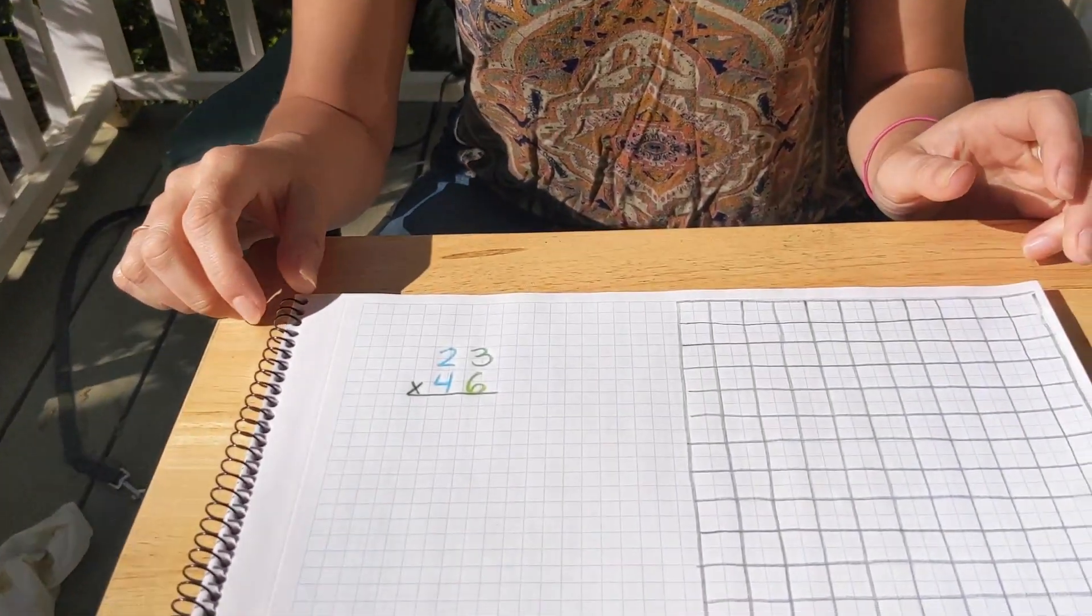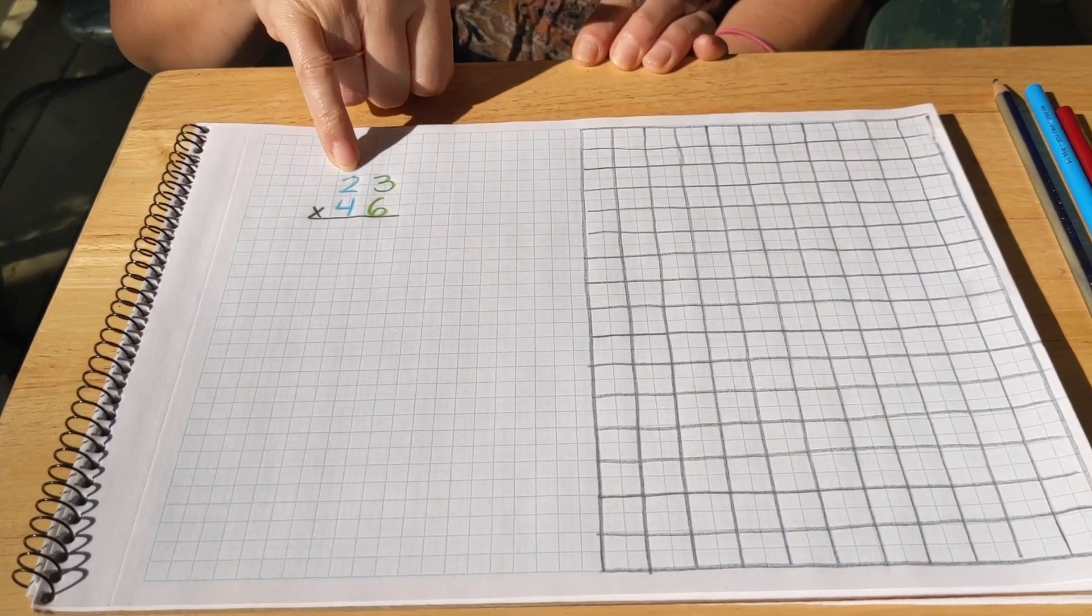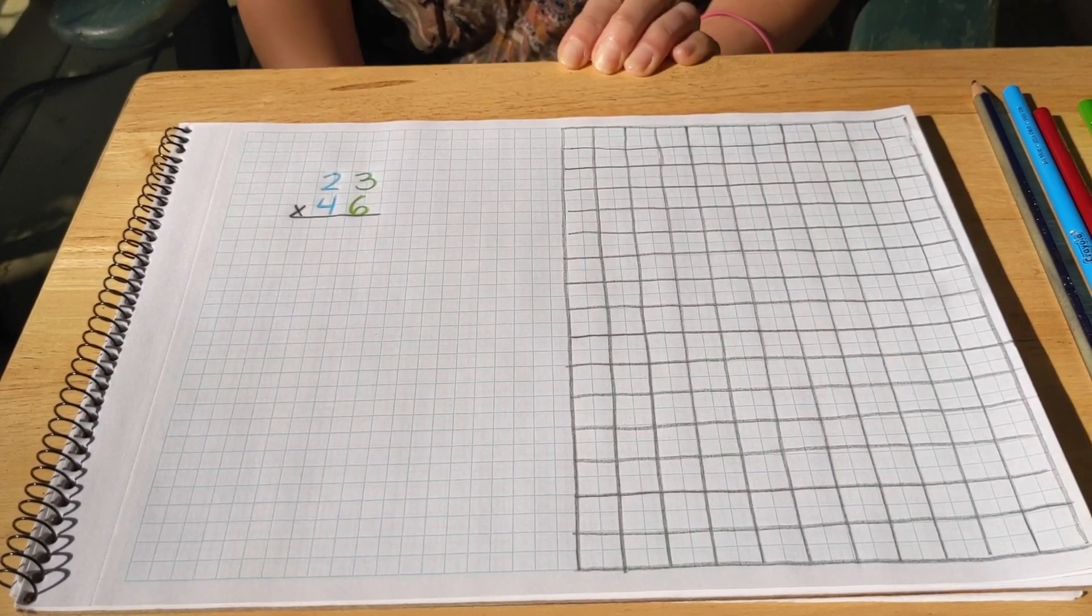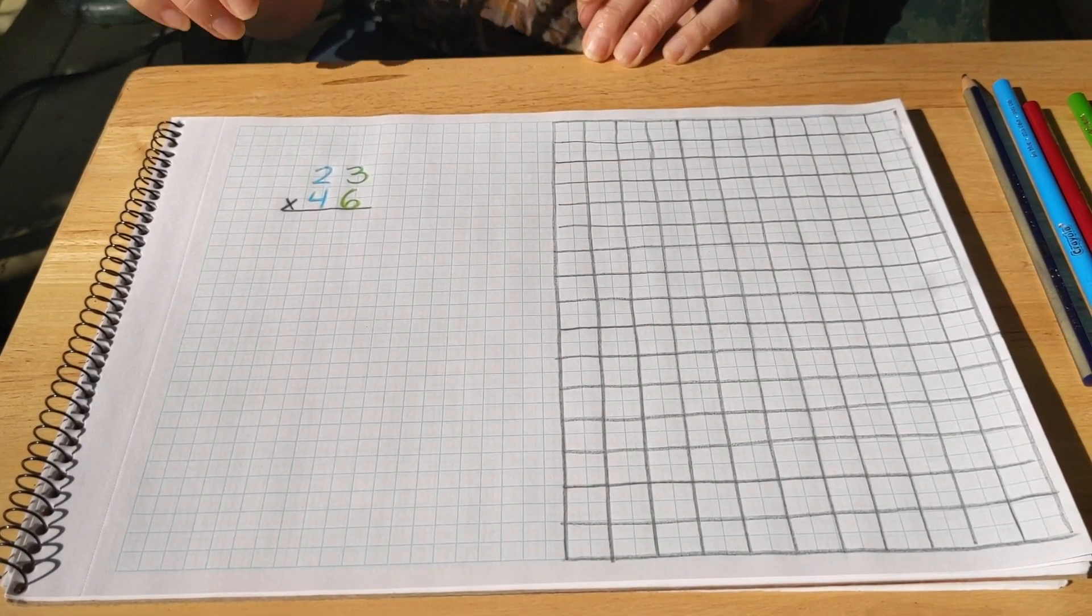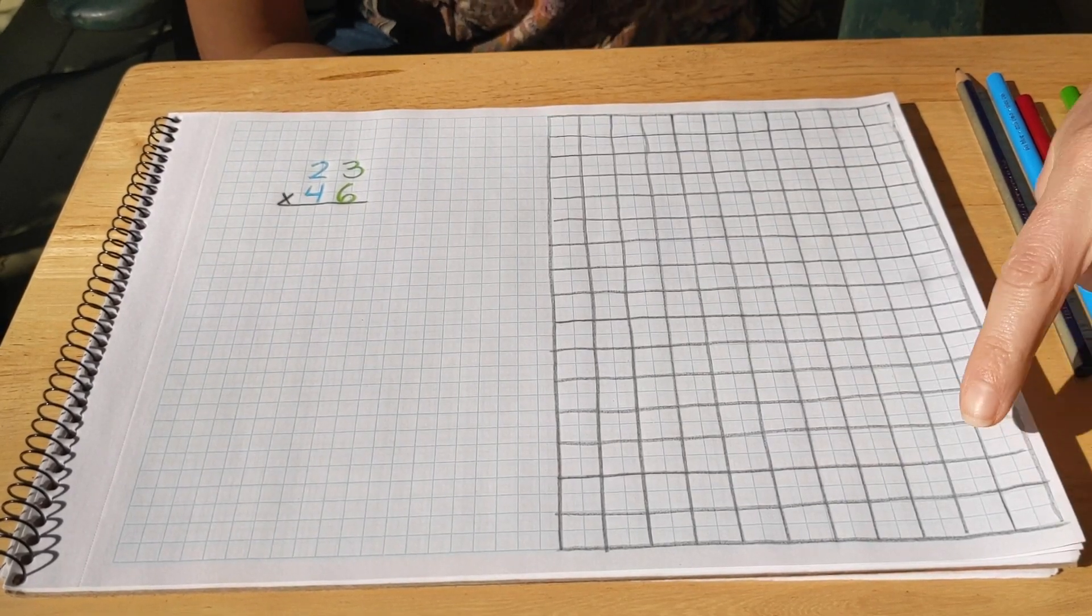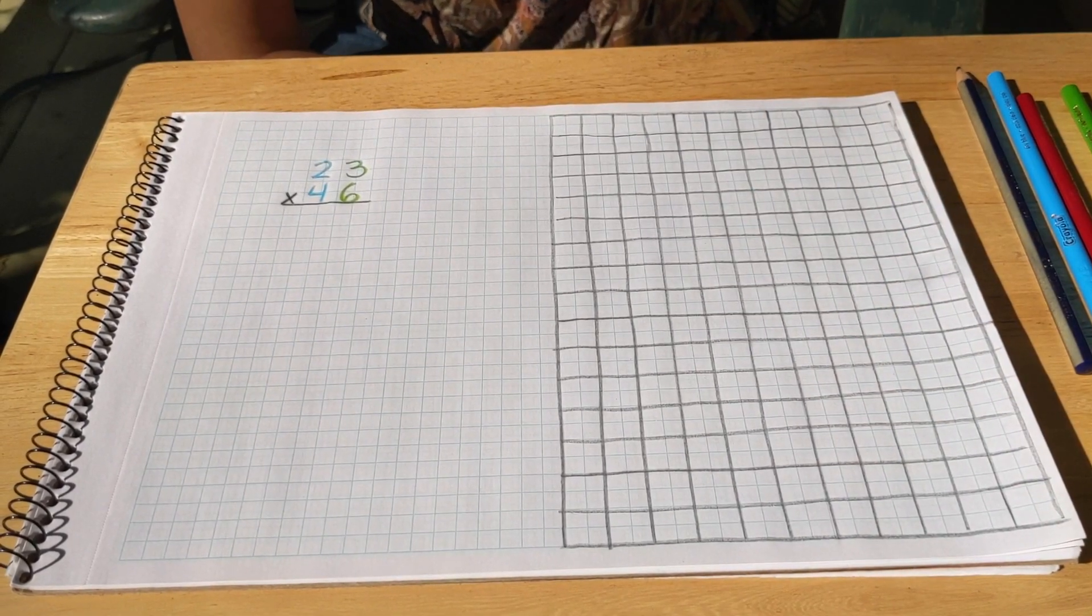So what we're going to be doing is a lot like the checkerboard. We're going to be multiplying first 23 times 46. And you see on the paper that I've written it out. Our tens are blue and our units are green. That should be familiar. And I only have very small graph papers, so I've traced over some of the lines to give us bigger squares to work in.